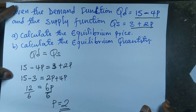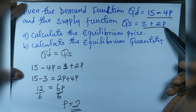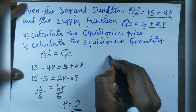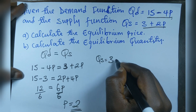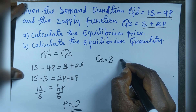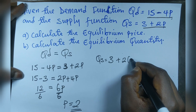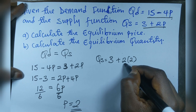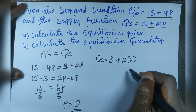To find the equilibrium quantity, we substitute the price into any of the functions. Using the supply function, Qs equals 3 plus 2 times 2, since price is 2. When we multiply 2 by 2 we get 4, and 4 plus 3 gives us 7.